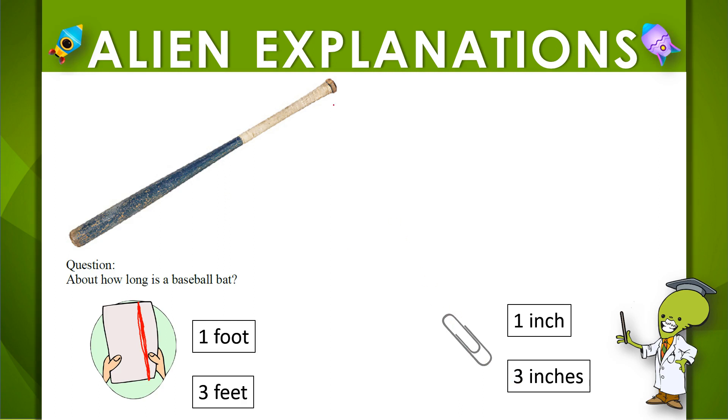What would be closest to the length of this baseball bat? One sheet of paper, three sheets of paper, one paper clip, or three paper clips?